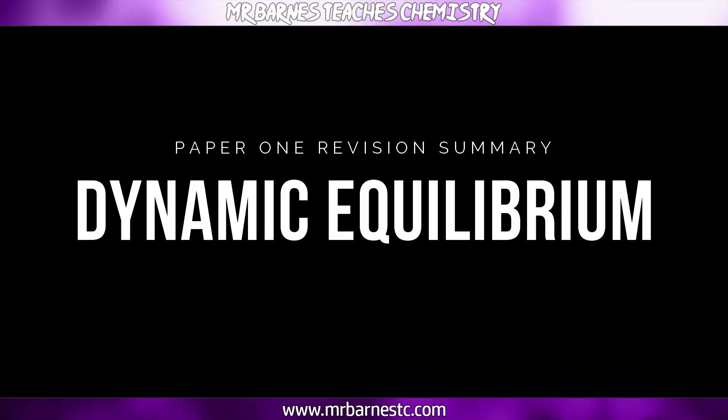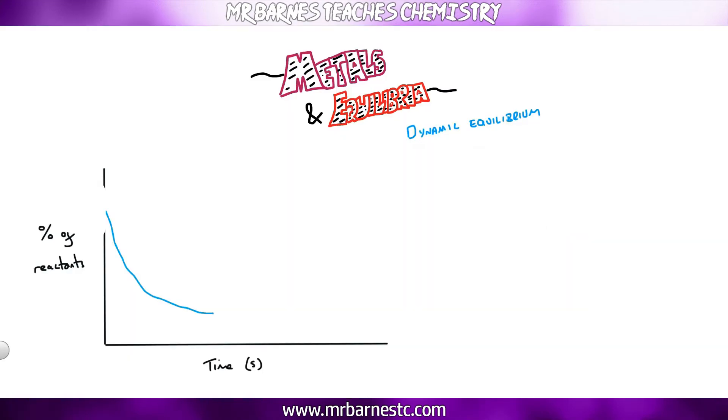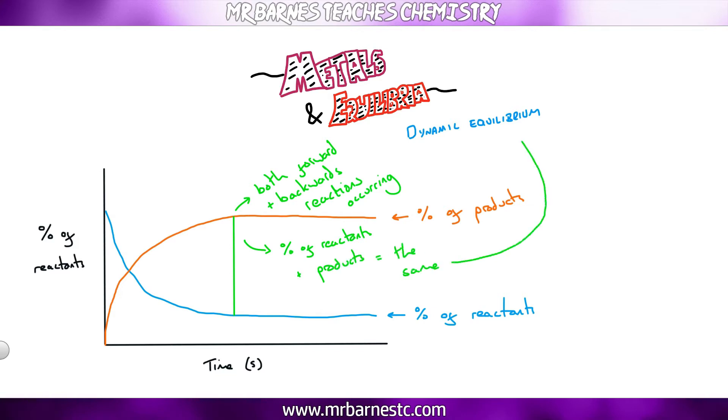So now you know what a reversible reaction is we need to know what dynamic equilibrium is. The best way to do that is to have a look at this graph here. This graph shows the percentage of my reactants which is going down and the percentage of my products which is going up. Now you can see at this point here it's leveled off, it's become flat. At this point both the forward and backwards reactions are occurring at the same time but the percentage of my reactants and products is staying the same. That's what dynamic equilibrium is.